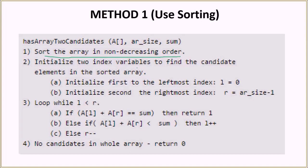Then we initialize two index variables L and R to find the candidates in the sorted array. L is initialized to 0 (the leftmost element) and R is initialized to size minus 1 (the rightmost element). We then loop through the array and check the condition that L should be smaller than R.